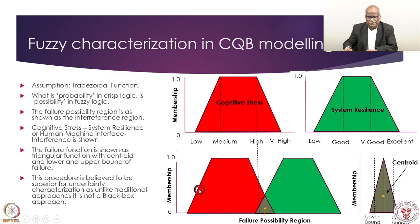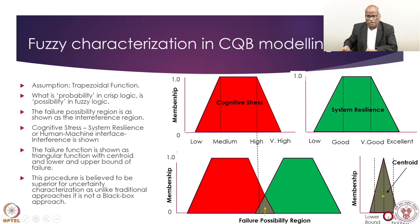We saw how the two membership functions for stress and resilience overlap. From that overlapping area we get the centroid, and for this particular triangle, there is a lower bound and an upper bound. This is important: we are characterizing uncertainty with a lower bound and upper bound, and it will have its own membership function.